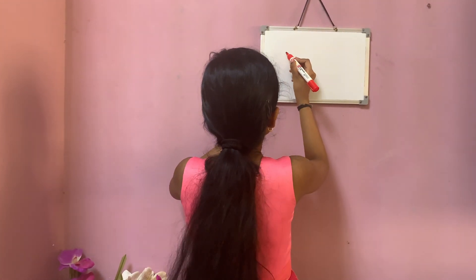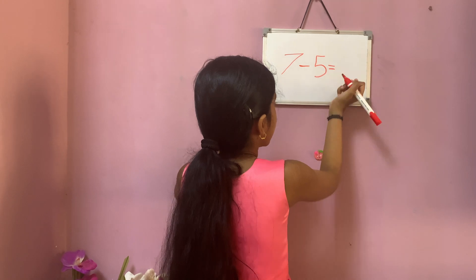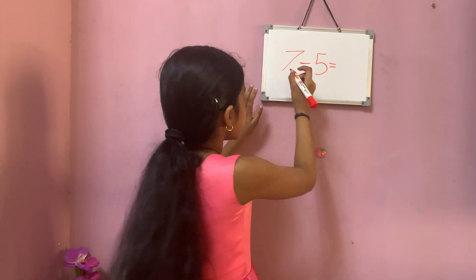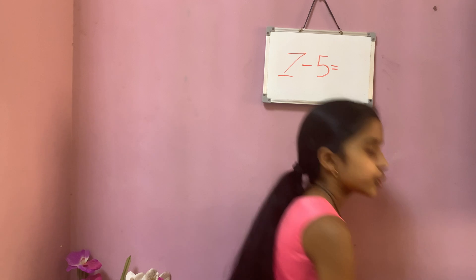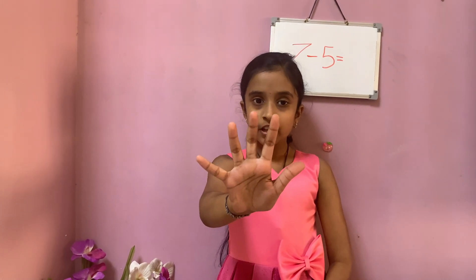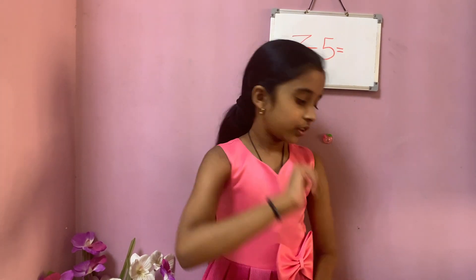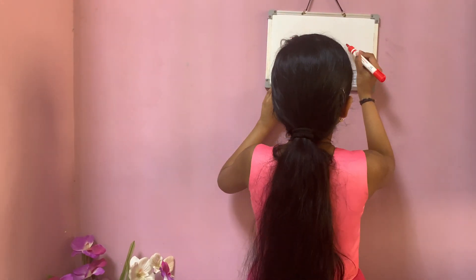You have a surprise quiz. Now let's learn the mind method. Here the big number is seven. So big number seven in mind and small number five in hand. Now let's count back from seven: five, four, three, two. So the answer is two.